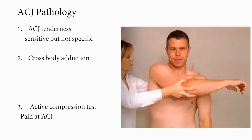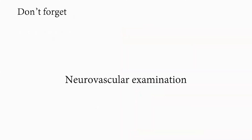For acromioclavicular joint pathology: AC joint tenderness is sensitive but not specific. The cross-arm adduction test reproduces pain at the AC joint. The active compression test — similar to O'Brien's — is positive when pain is superficial and localized to the acromioclavicular joint, not deep inside the shoulder joint. Finally, do not forget neurovascular examination, especially the axillary nerve, particularly in patients with a history of previous surgeries.